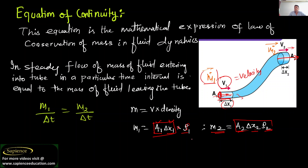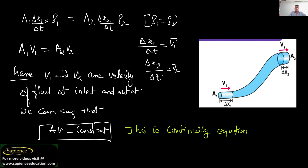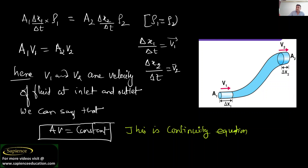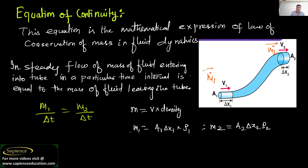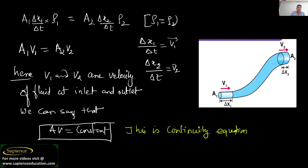Mass entering at inlet is equal to A1 into delta x1 into density rho1, and mass at outlet m2 equals A2 into delta x2 into rho2. Since mass entering equals mass coming out, we can rewrite this equation by dividing both sides by time delta t.